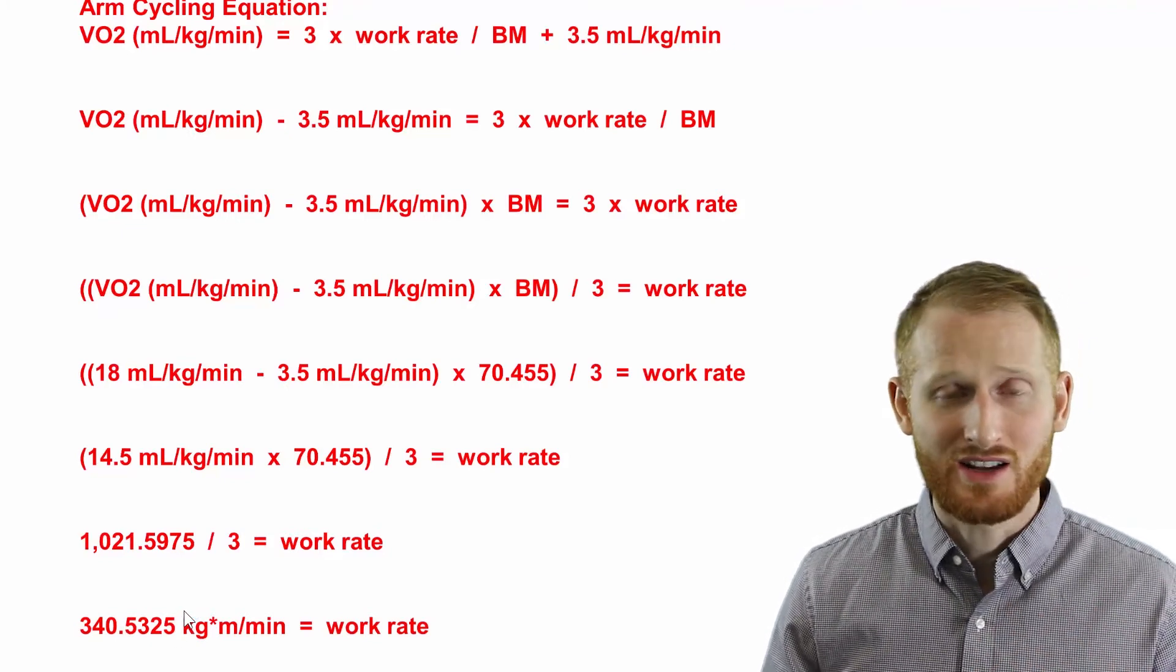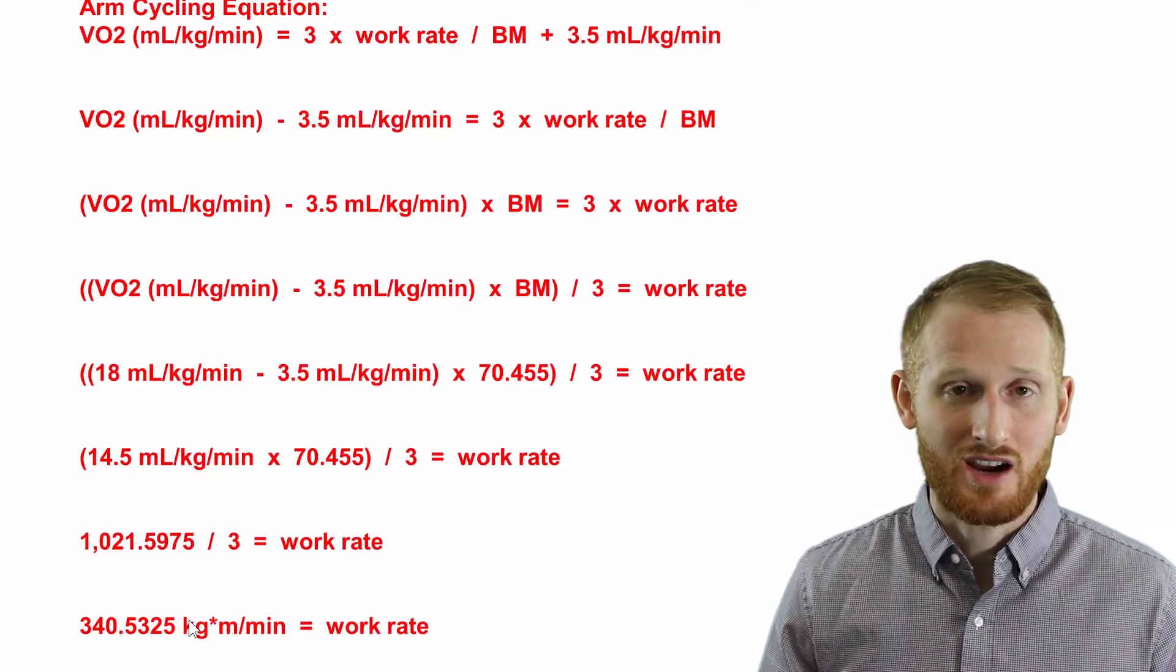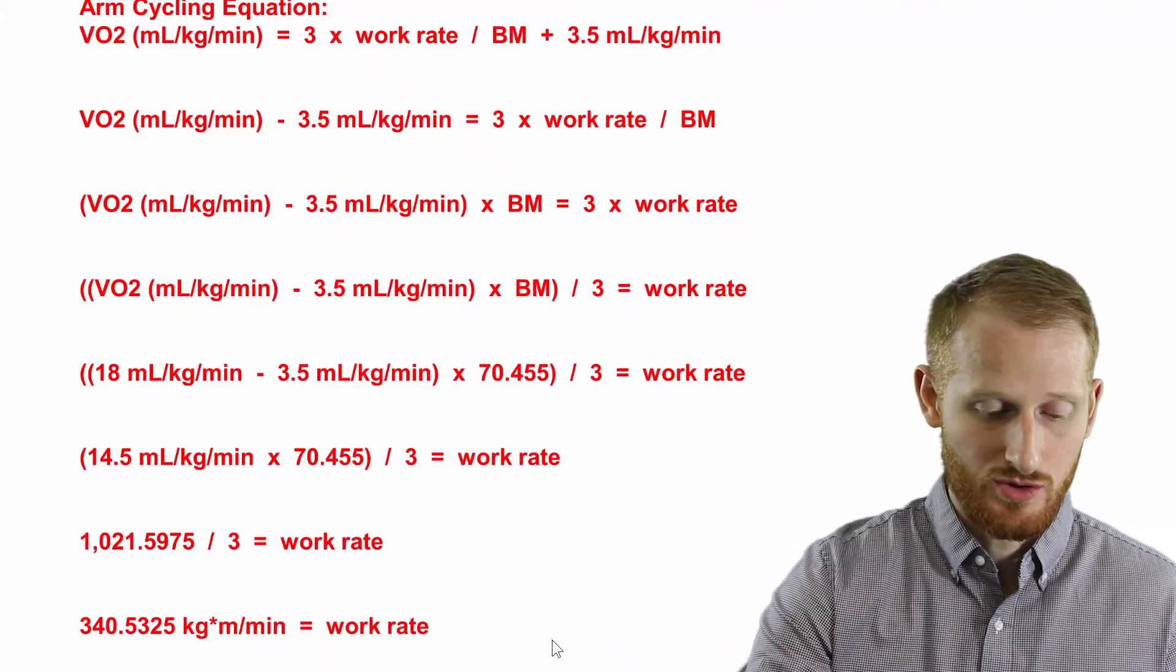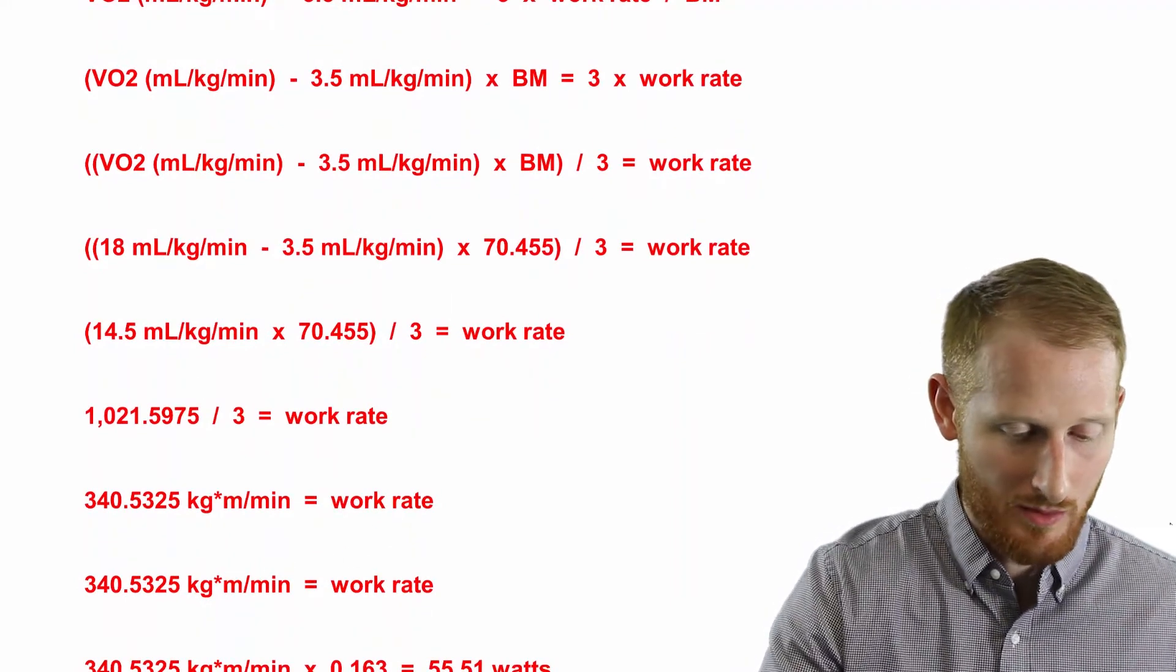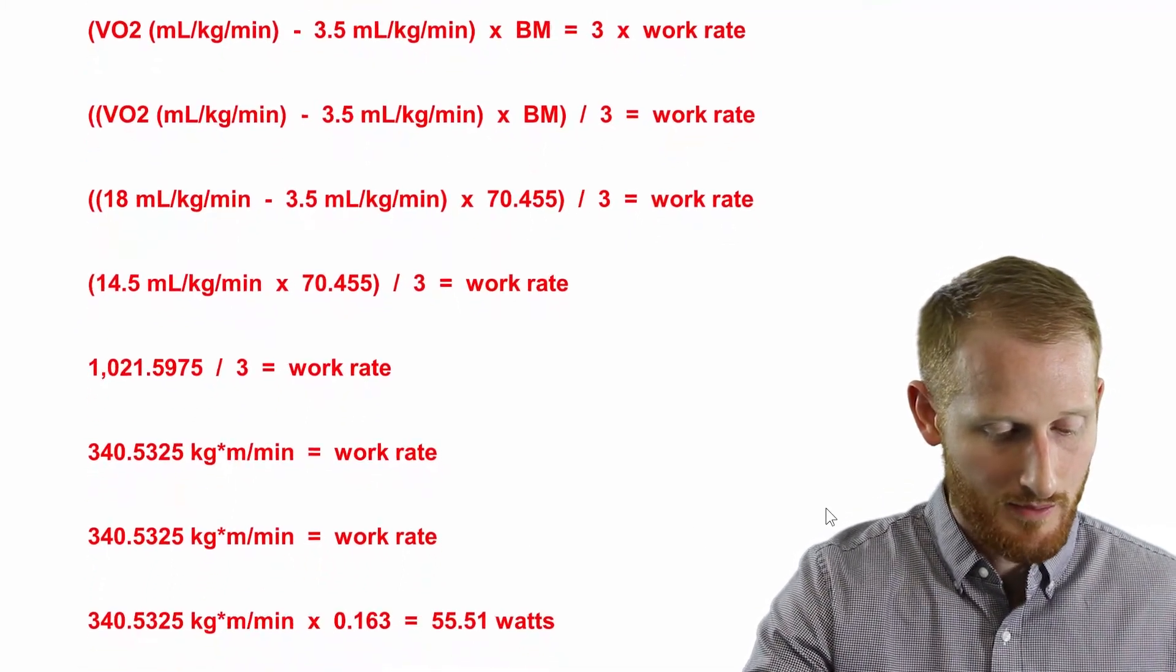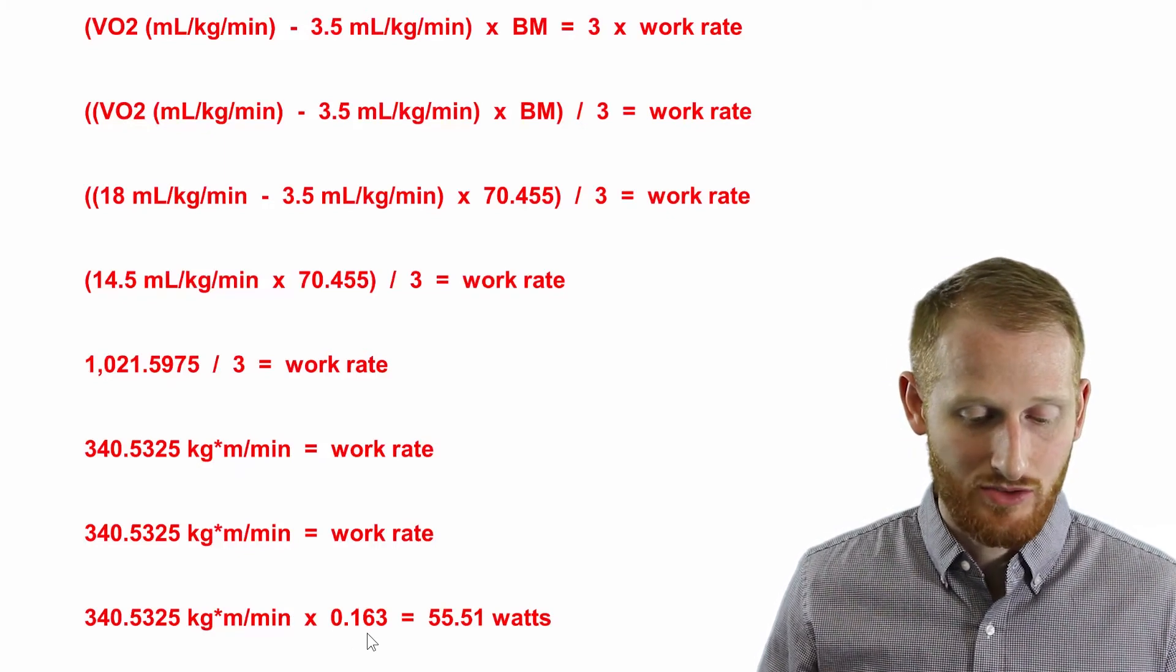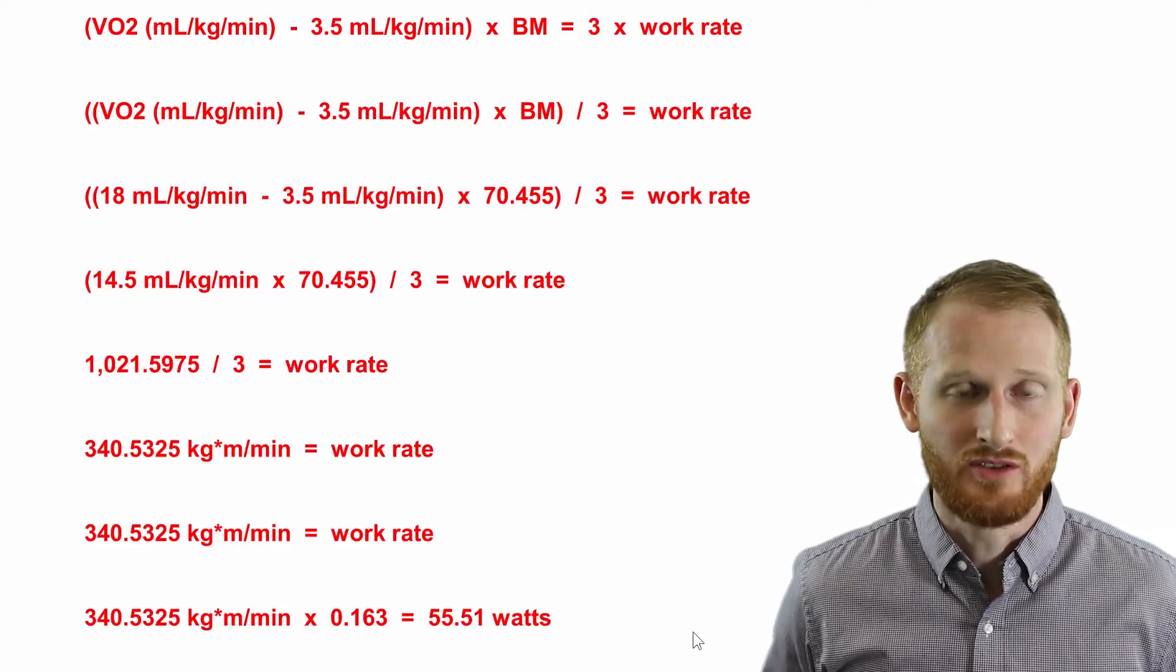And then of course you can round. I try not to round until the very end and we're going to do one more step. We're going to go from kgm per minute, which is what the ACSM equations calculate and use, and we're going to convert this to watts, which is the more useful unit that most exercise equipment is actually going to use. In order to do this, what we need to do is we're going to take the work rate in kgm per minute, we're going to multiply that by the conversion factor of 0.163, and that's going to give us 55.51 watts, which again you can round to 56 watts.